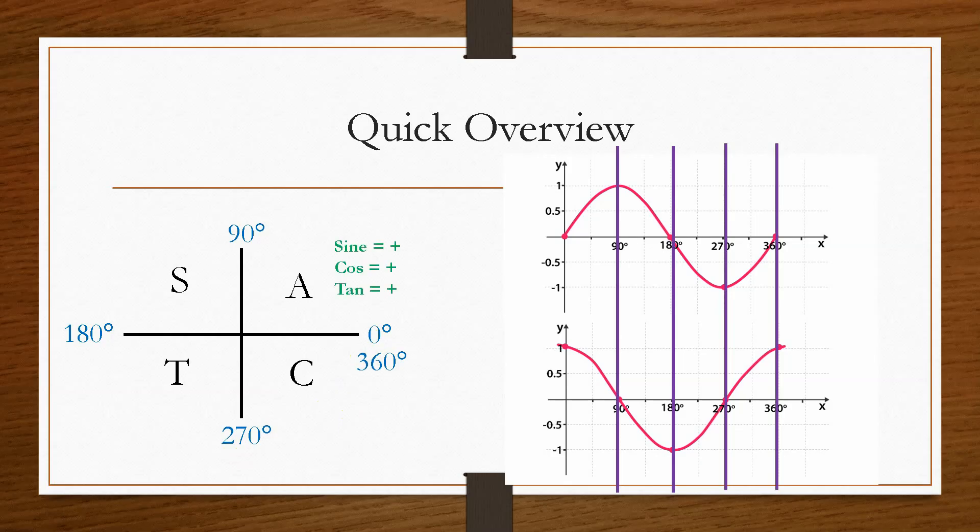Now, in the A section, all three are positive. So let's check. So between 0 and 90 degrees, both the sine graph and the cos graph are in the positive region of the chart. Then if we look at the S section, which is sine is positive, then here we can see that the sine section is above 0. However, this time, the cos is in the negative region, hence why cos is negative.